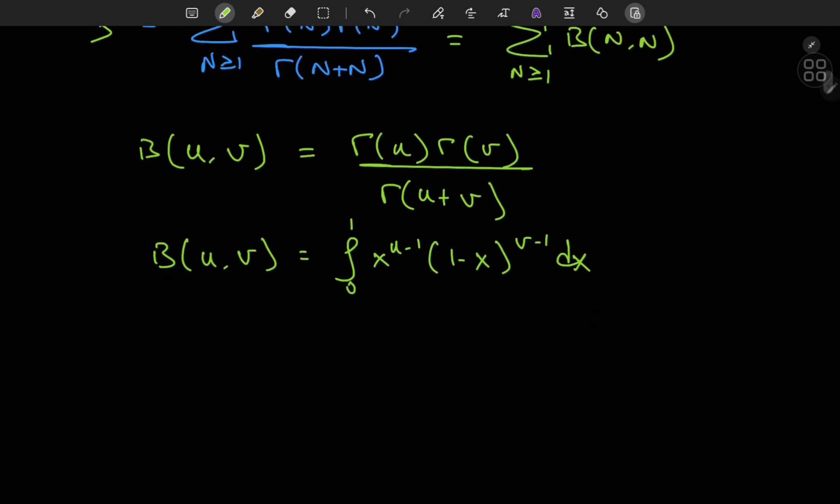So let me just write the sum now as S being equal to the sum over n of the integrals from 0 to 1 of x to the n minus 1 times 1 minus x to the n minus 1 dx.